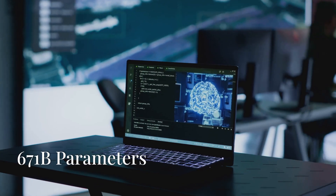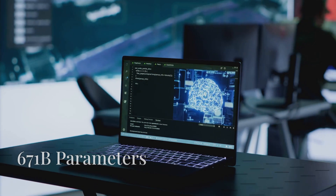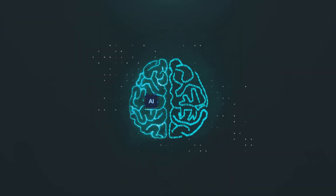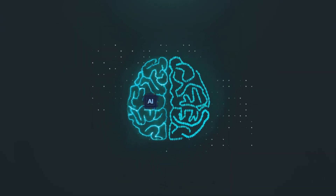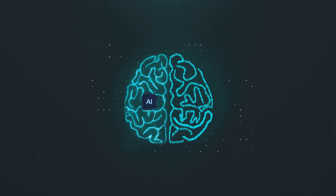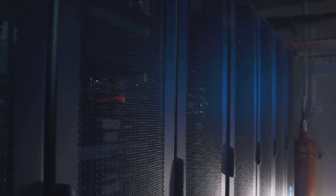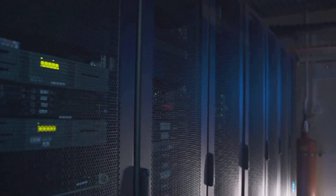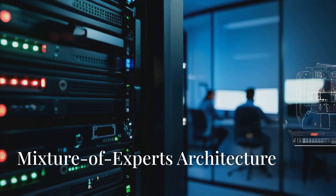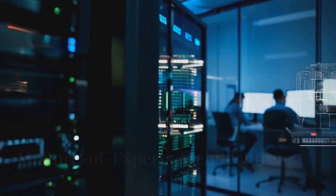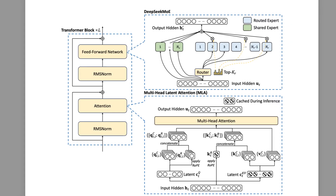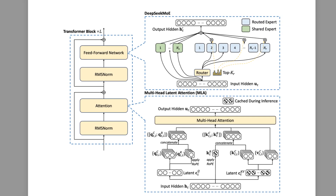DeepSeek V3 boasts an impressive 671 billion parameters. In AI terms, parameters are like the synapses in a human brain — they determine how the model processes information. More parameters generally mean a more capable model, but they also require more computational resources. To manage this complexity efficiently, DeepSeek V3 employs a Mixture of Experts, or MoE, architecture.